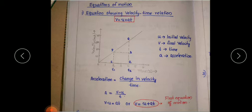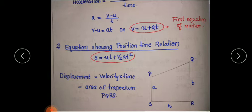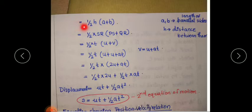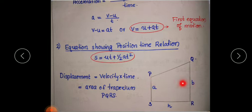In order to find the displacement, we have to find the area of this trapezium. Displacement is equal to velocity into time, which is the same as the area of trapezium PQRS. The formula for the area of a trapezium is ½ × H × (A + B), where H is the distance between the parallel lines, and A and B are the parallel lines.